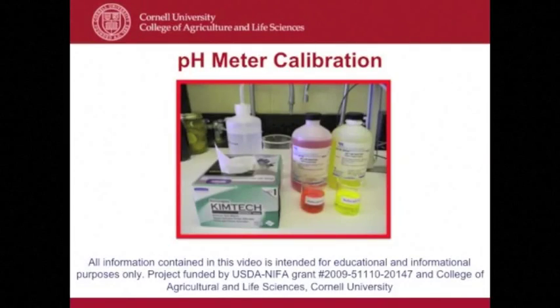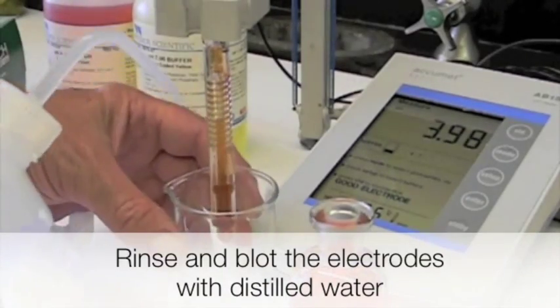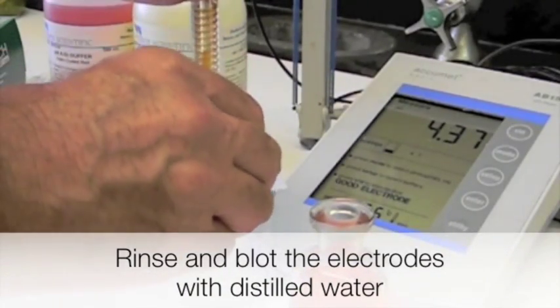This educational video demonstrates how to calibrate a pH meter using two buffers to comply with FDA acidified food regulations. Always follow the manufacturer's instructions for each meter.